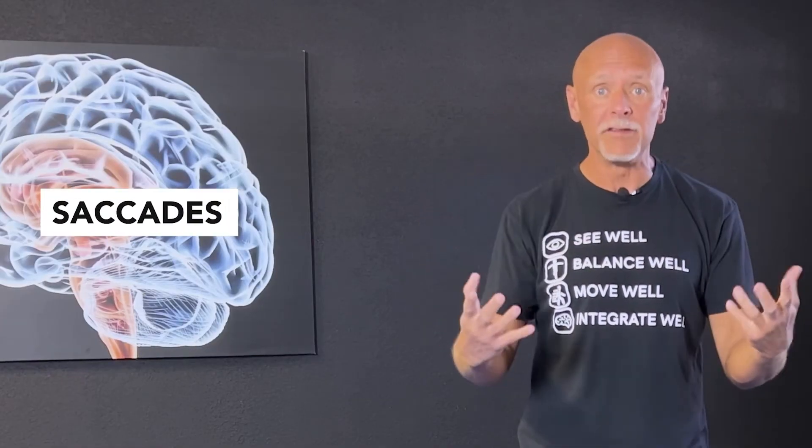And then we have what are called saccades. Saccades are very rapid changes, shifts in my visual fixation points. What we see in people with compromised balance is they often have problems with both of those issues, both smooth pursuits and saccades.